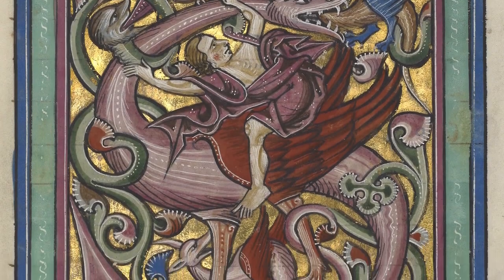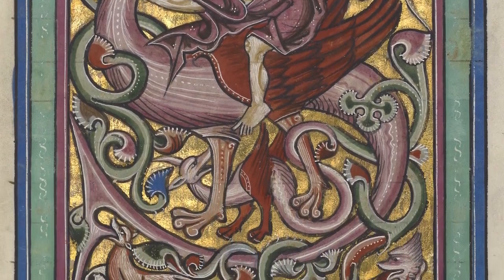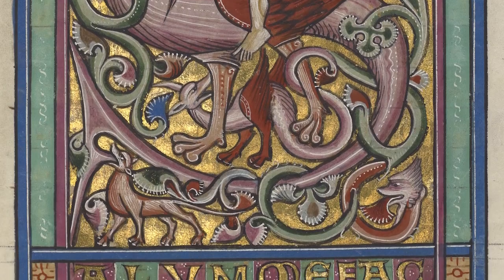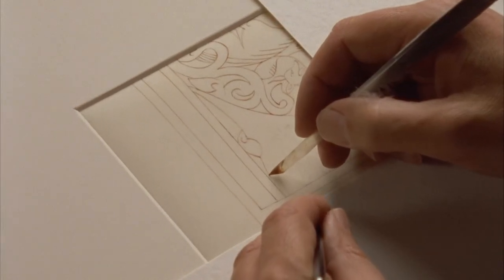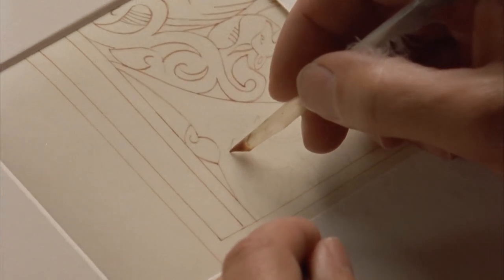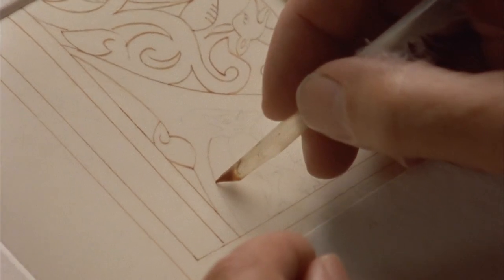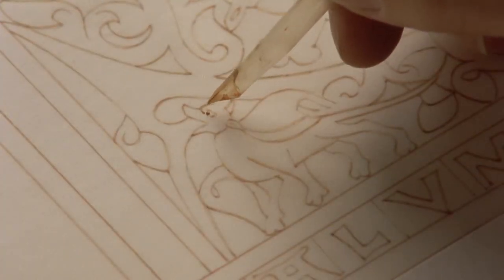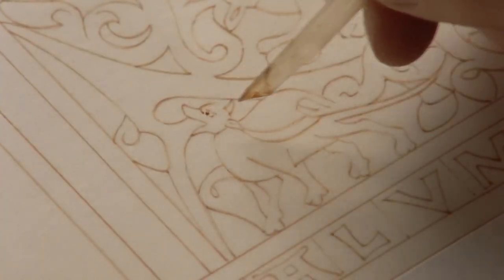An illuminator decorated the pages of a manuscript using paint and precious metals. He began only after a scribe had finished copying the text. The illuminator first sketched his design, then added details, such as the features of a figure or the interlacing of a decorated initial.